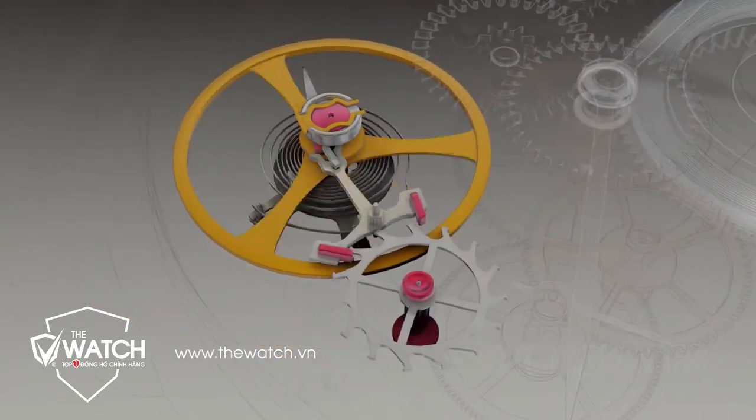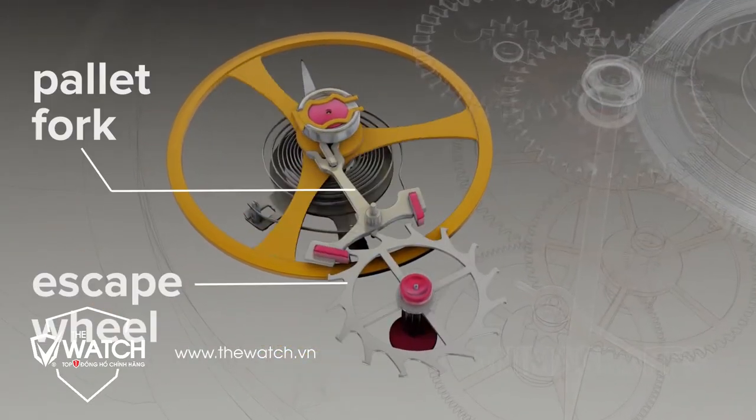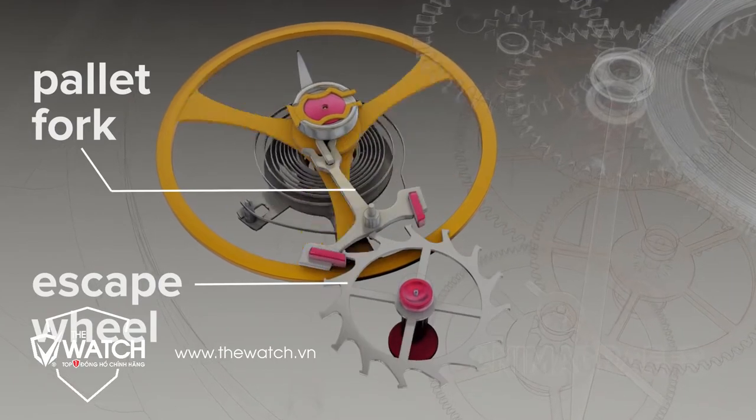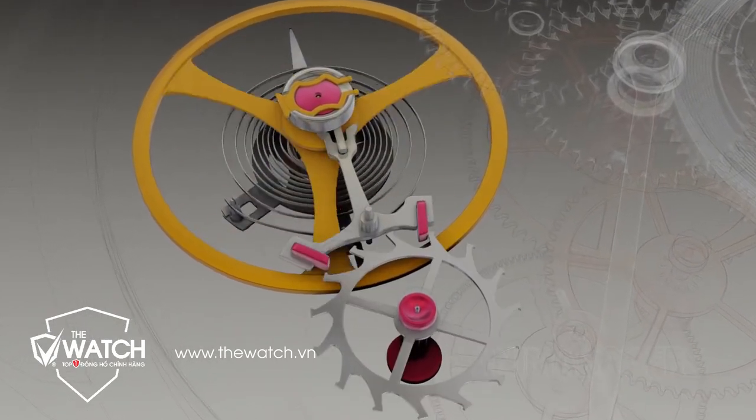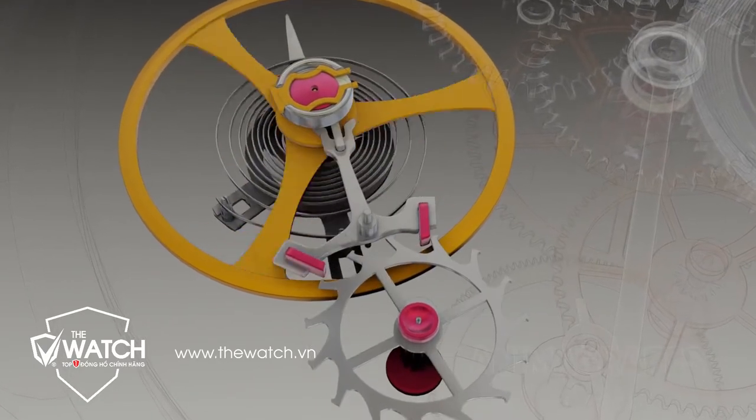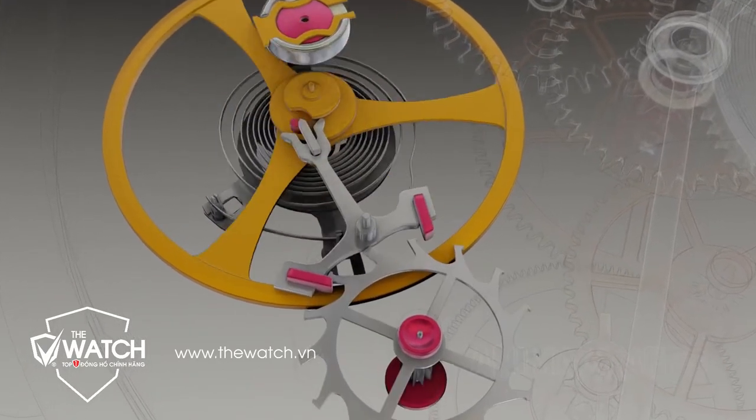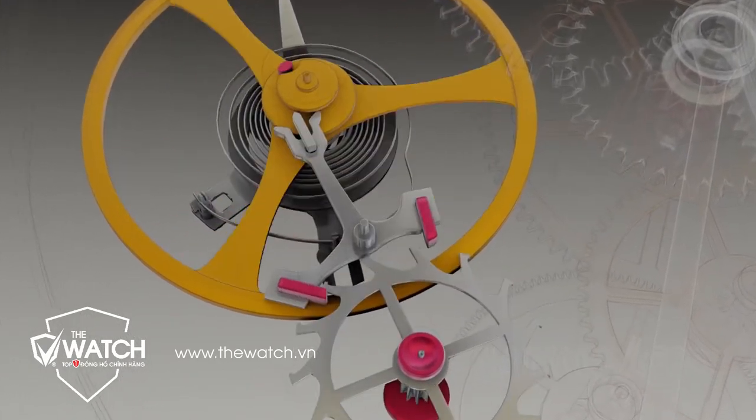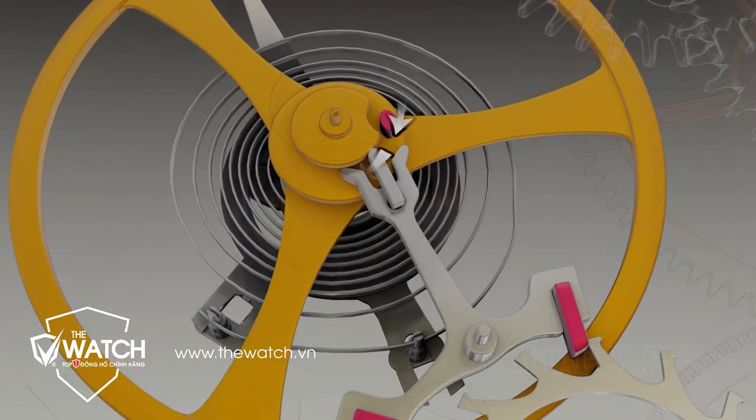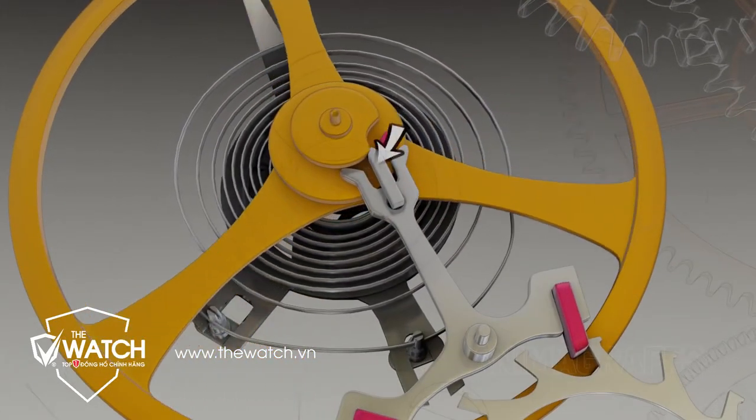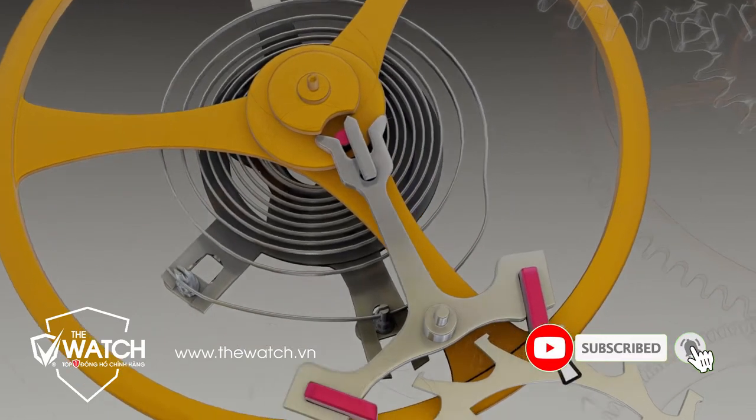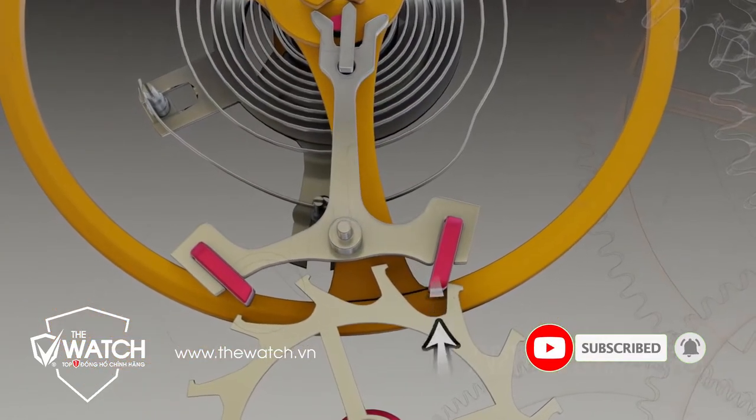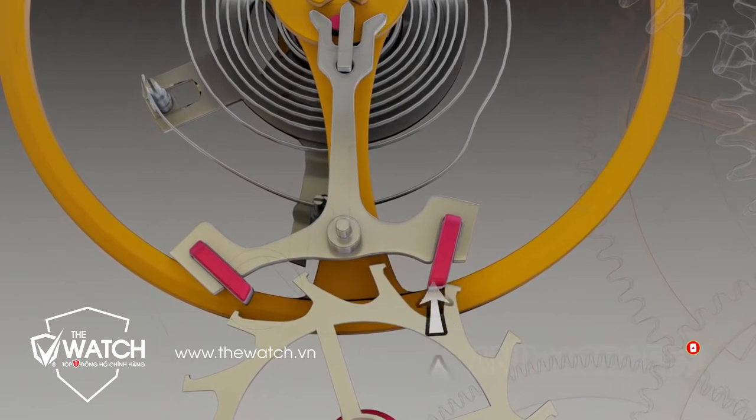The escapement. The pallet fork and escape wheel form the escapement. A clever exchange of power happens here that forms the heart of mechanical watch operation. Driven by the hairspring, the balance wheel impulse pin bumps into one side of the pallet fork, releasing the opposing pallet jewel from its locked position against an escapement wheel tooth.